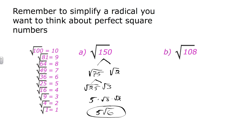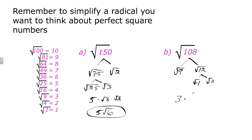Over here we have 108. It breaks down as the square root of 9 times the square root of 12. The square root of 9 is 3. And square root of 12 breaks down into square root of 4 times square root of 3. The square root of 4 is 2. So we have 3 times 2 times the square root of 3. Since we can't take the square root of 3, 3 times 2 is 6, giving us 6 square roots of 3.